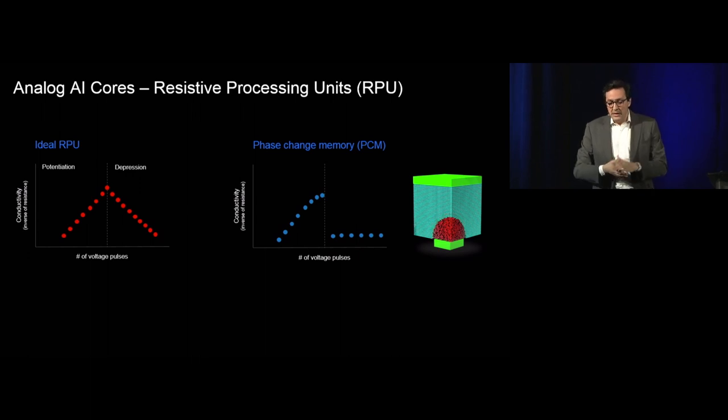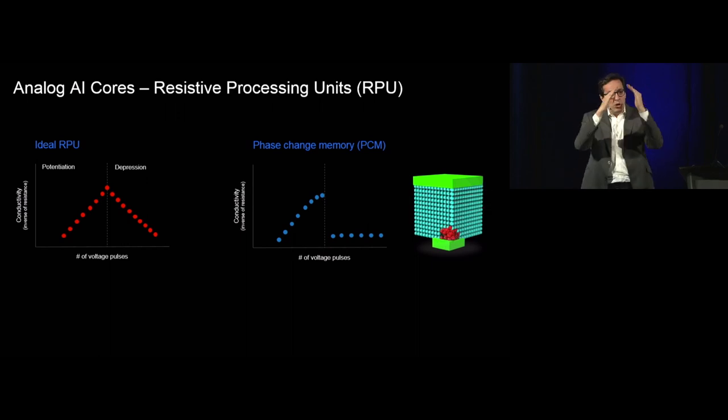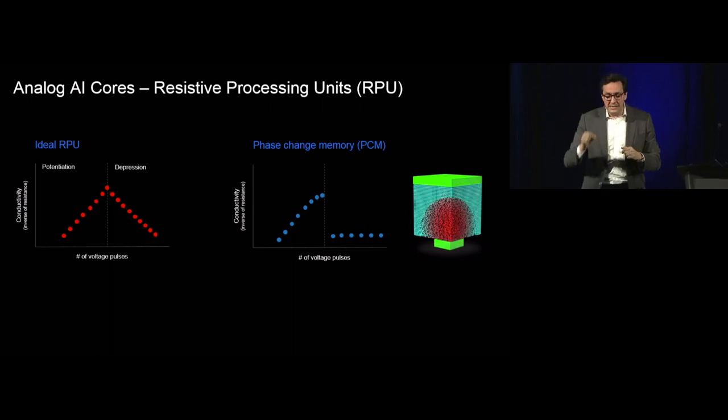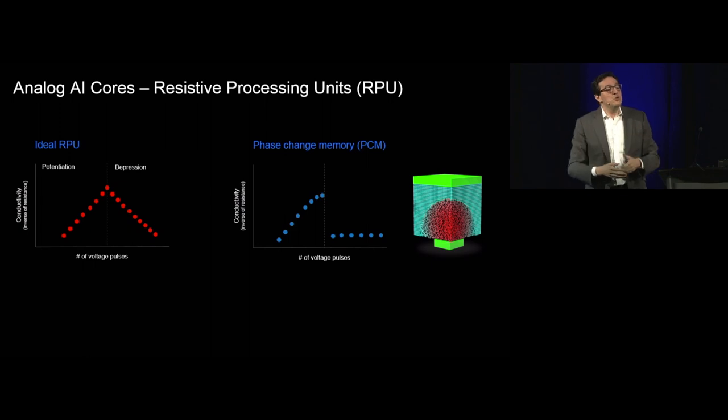So how do you build that device? An ideal resistive processing unit will have a set of characteristics. Fundamentally, they have to have symmetric switching. We don't care about that in a traditional memory, but here when you want to be able to store the weights between 0 and 1, you would like that on both going up and down, you have this symmetric characteristic. Today, if you use a phase change memory element, you can achieve fine gradation in one direction, but then you get very asymmetric switching behavior.